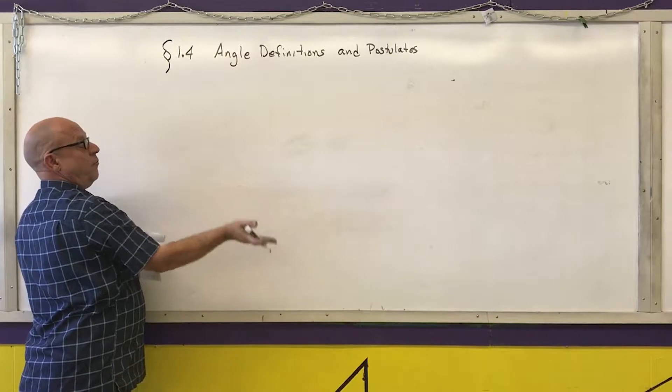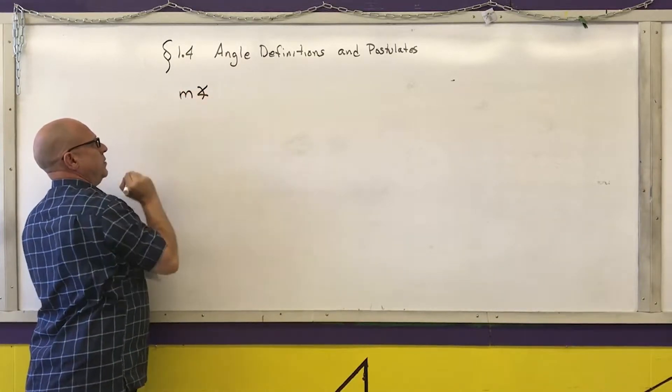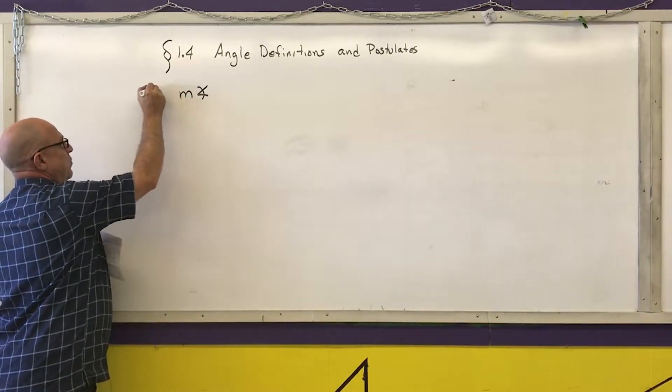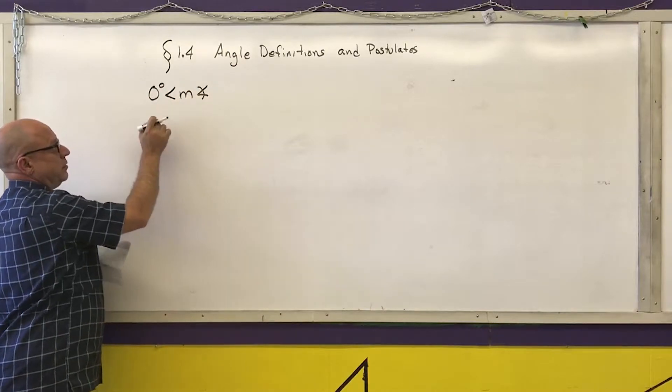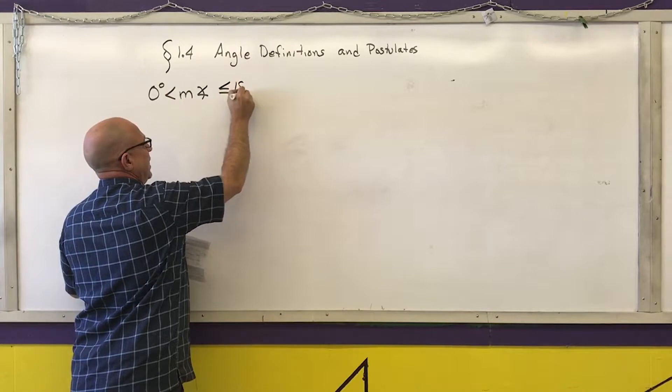If I want to know how big an angle is, we put the little letter M in front of the angle symbol. The measurement of an angle has to be more than zero degrees and it has to be less than or equal to 180 degrees.